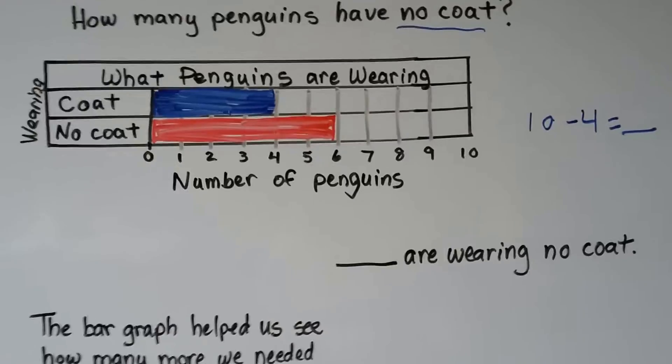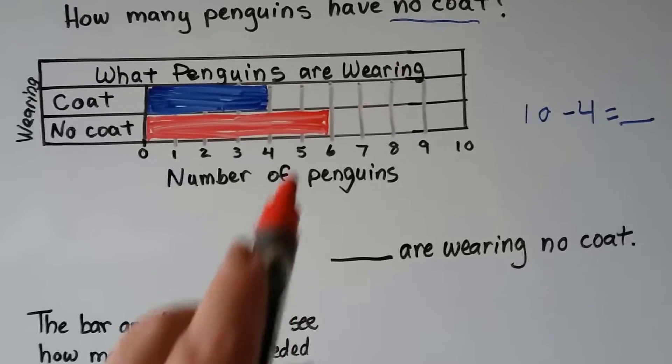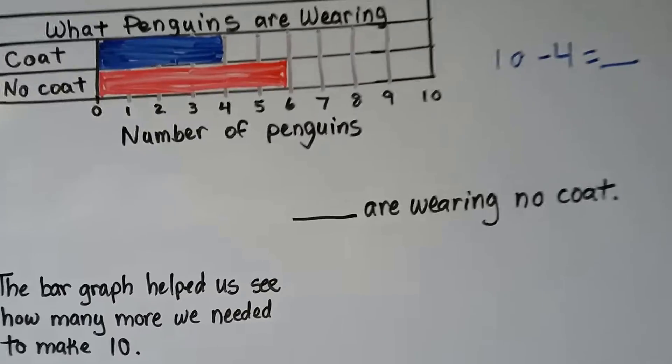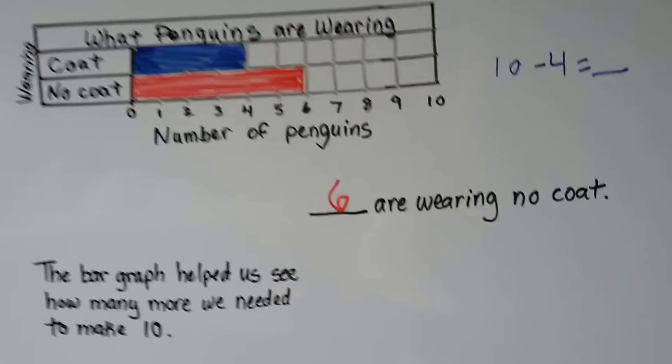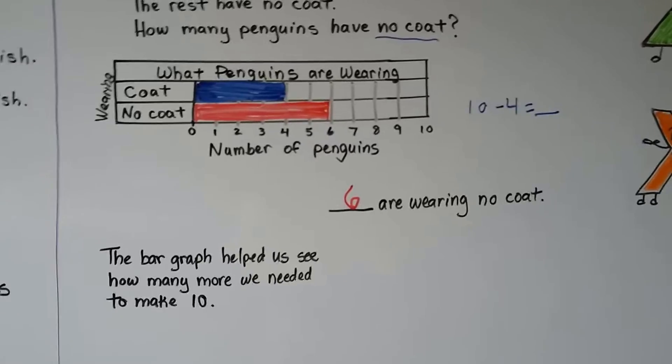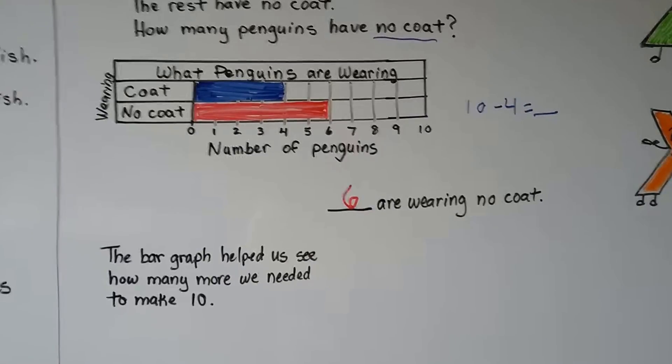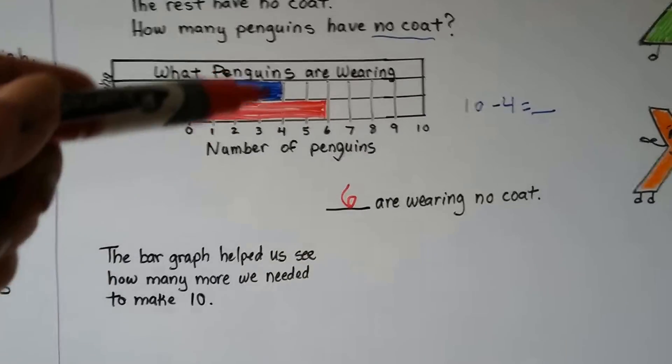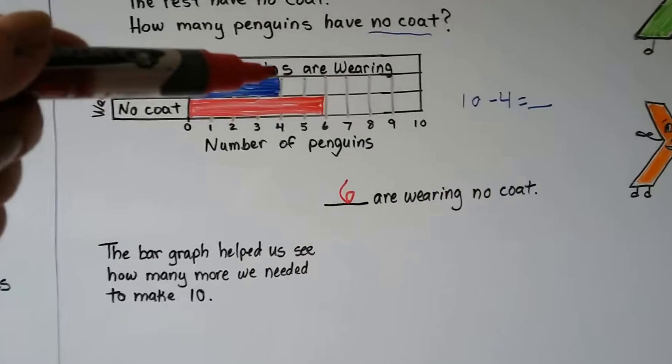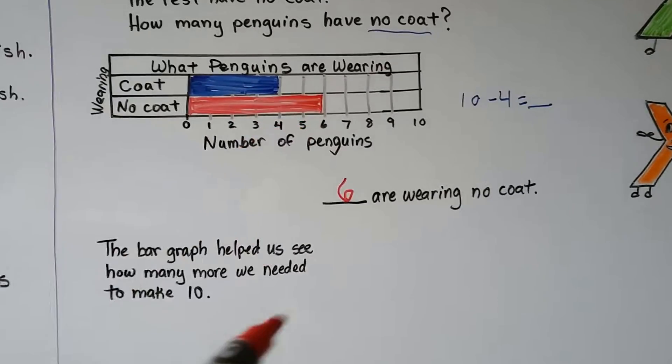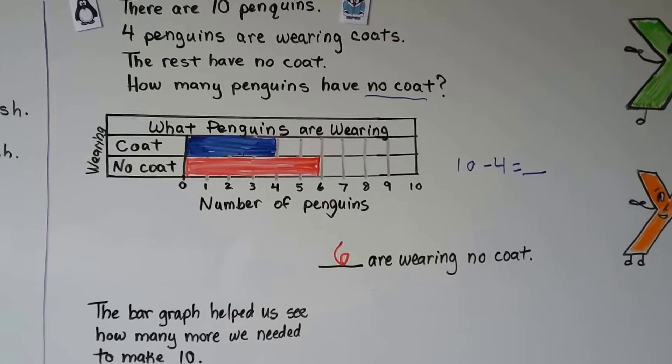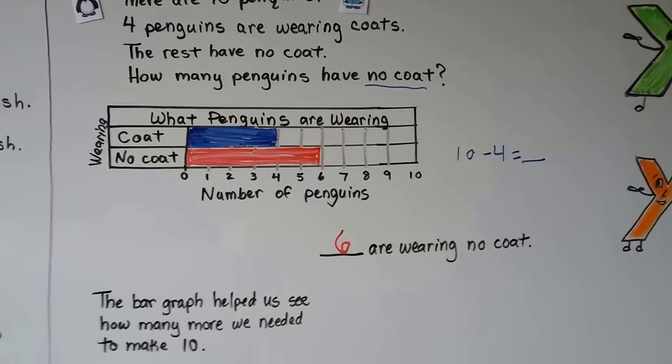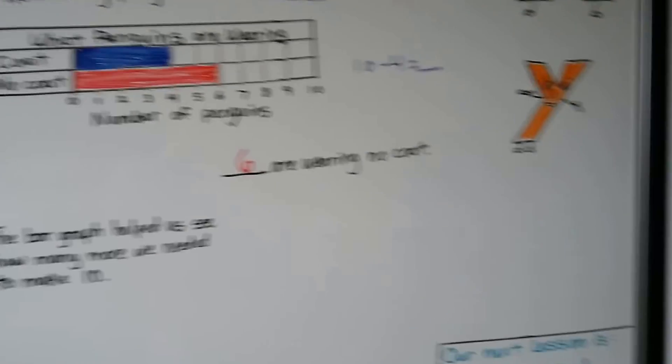So how many are wearing no coat? Six. And the bar graph helped us to see how many more we needed to make ten. Four with a coat plus six with no coat would be ten penguins. Okay, let's try one last one.